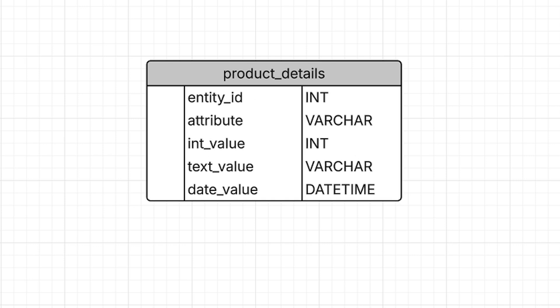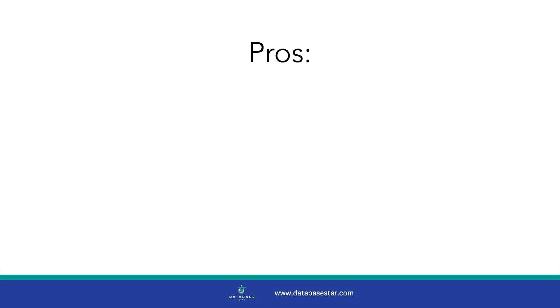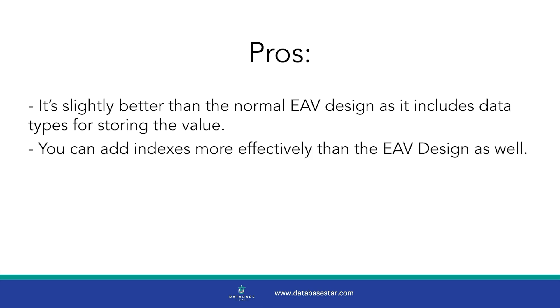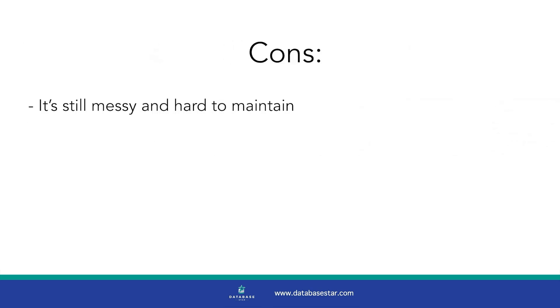Another option is to use property tables, like an EAV design, but with specific columns for each data type. This type of design is best if you really need to use a flexible model but want stronger data types than a traditional EAV design. You have a single table that stores the Entity ID and the Attribute Name, but instead of one column for the value, you have several — one for integer values, one for text values, one for dates, and possibly others for time or Boolean values. The benefits are that it's slightly better than the normal EAV design as it includes typed columns, and you can add indexes more effectively. However, it's still messy and hard to maintain, and it's hard to ensure that only one of the value columns is populated.